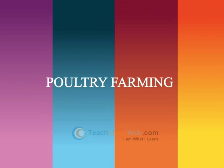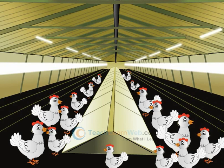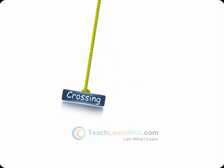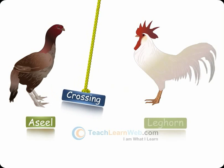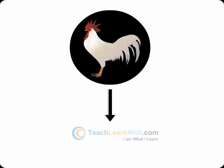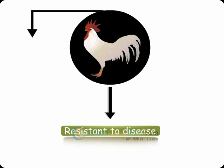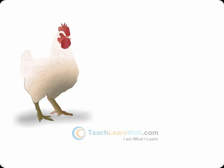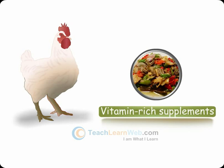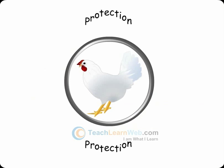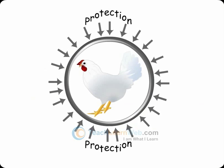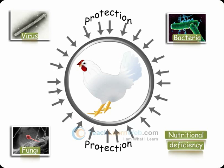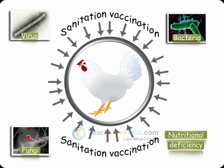Poultry farming includes the development of poultry breeds to produce layers for eggs and broilers for meat. Cross breeding is done between Indian Aseel and foreign Leghorn to develop a new variety resistant to diseases, as well as producing eggs and meat in good proportions. Broiler chickens are fed with vitamin-rich supplementary feed to increase meat production. Poultry fowl should be protected from various diseases caused by virus, bacteria, fungi, and nutritional deficiency, which can be managed through sanitation and vaccination.